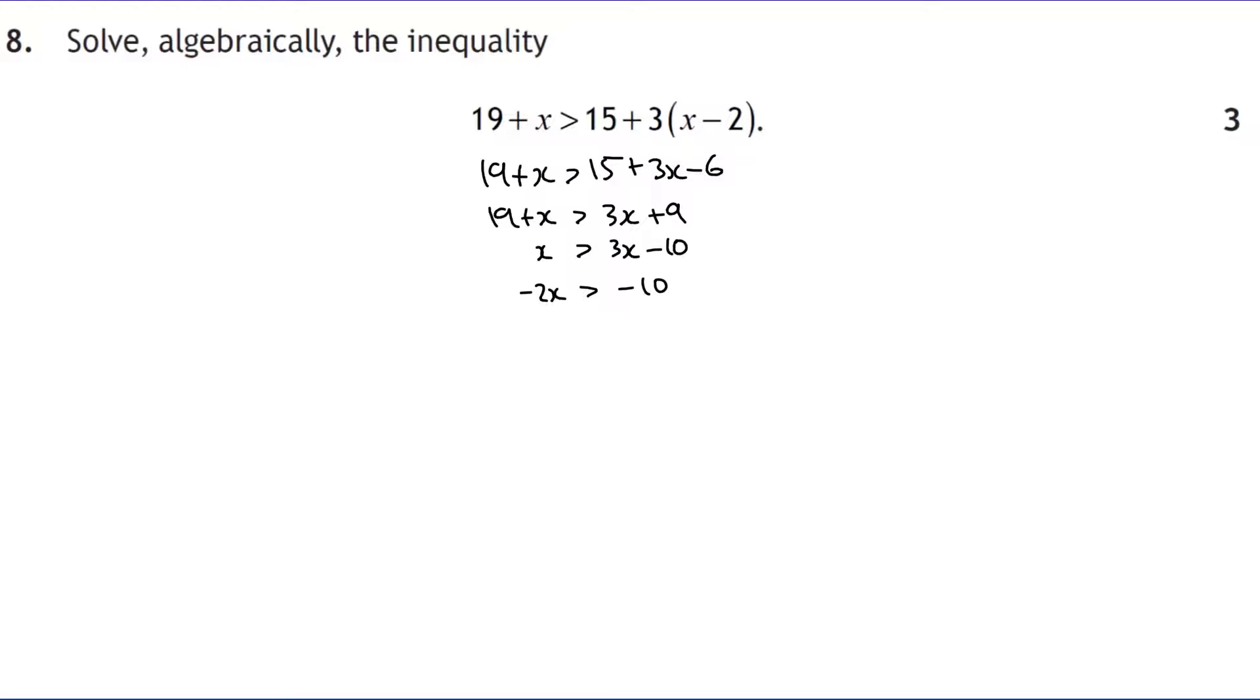So we get negative 2x equals negative 10. The next step, I'm going to have to divide by a negative. If I divide by a negative, I have to flip the arrow. Negative 10 divided by negative 2 would be 5. So we end up with x is less than 5. Just remember, flip that arrow, quite a common mistake to forget that stage.